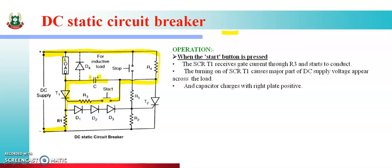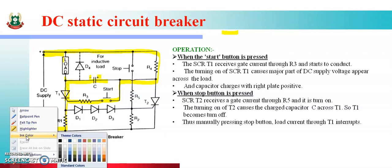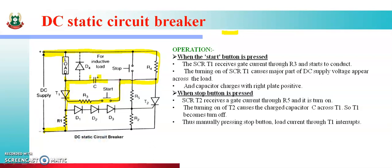अगर हमको circuit को break करना है तो हम stop button को press करेंगे। Stop button press करने पर current इस तरीके से flow होगा। R5 के through होते हुए T2 को gate current मिलेगा।